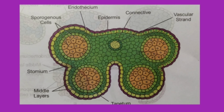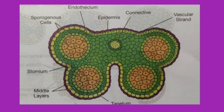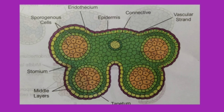This is the detailed structure of a tetrasporangiate microsporangium. Tetrasporangiate means it has four chambers, hence it is called the tetrasporangiate microsporangium. This is very important for your board exams and several questions will come from this part. The microsporangium has separate layers of cells. The outermost layer of the microsporangium is called the epidermis, which forms the walls of the microsporangium. Next to the epidermis is the endothecium.